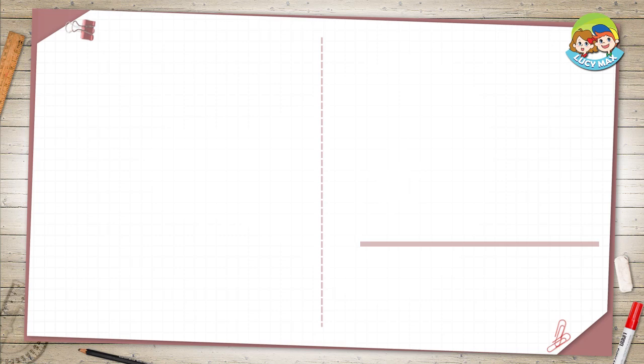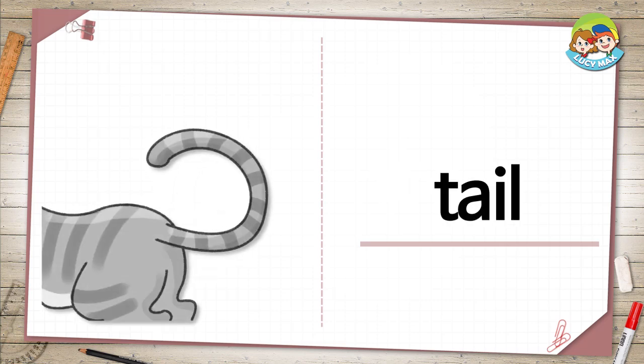Let's look at the key vocabulary words using the pictures. The first word is tail. The long thing at the end of an animal's back is a tail.